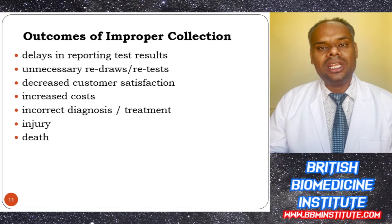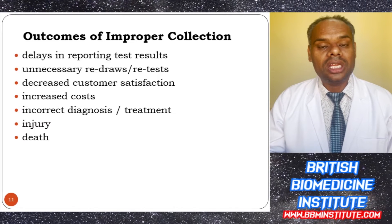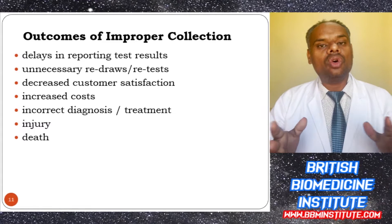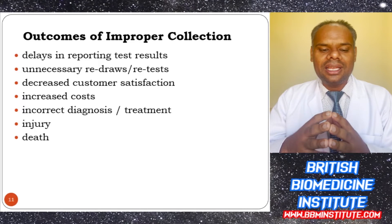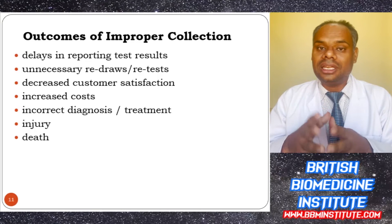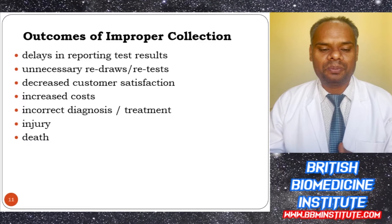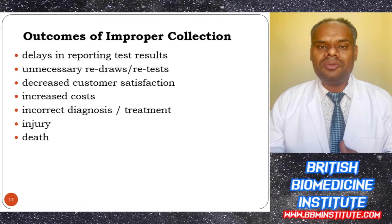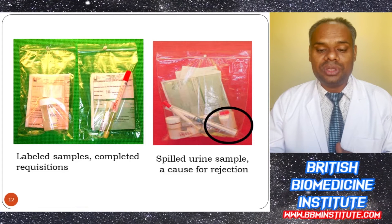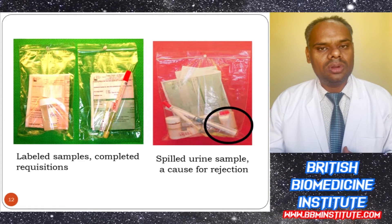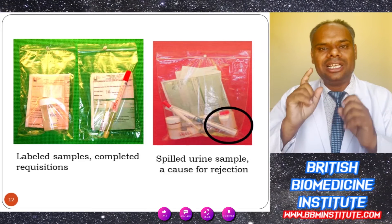If there is improper collection, it can result in delay in reporting test results, unnecessary redraws or retests, decreased customer satisfaction, increased cost, incorrect diagnosis and treatment, and injury — a patient can even die if an incorrect result is provided by the laboratory. We must ensure samples are properly labeled, requisitions completed, and vials are tightly closed.